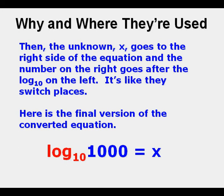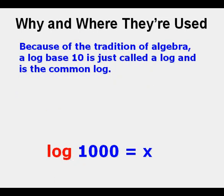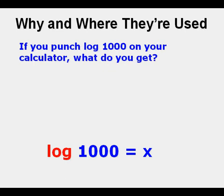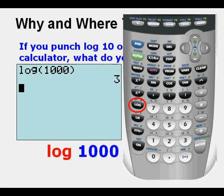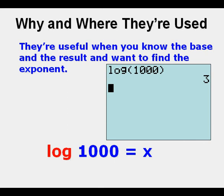And let's compare with the original equation here. Because of the tradition of algebra, a log base 10 is just called a log and is the common log. If you punch log 1000 on your calculator, what do you get? Well, log of 1000 equals 3. You get 3 because 10 to the third power equals 1000. And these are very useful when you know the base and the result and you want to find the exponent.